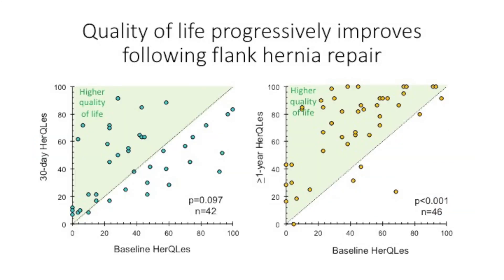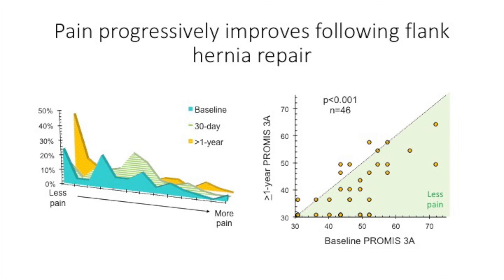We measured quality of life using patient-reported HERCULES scores. While there was no change in quality of life at 30 days post-op, there was a progressive and significant improvement in the median and paired scores reported by individual patients at one year or more after surgery. We saw a similar trend with patient-reported PROMIS-3A pain scores. The median pain scores decreased at one year or more after surgery, including a higher proportion of patients reporting lower than average and no pain, and individual patients also reported reductions in pain at one year or more after surgery.